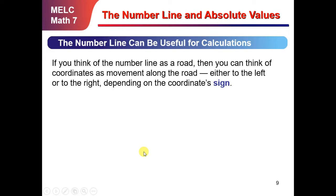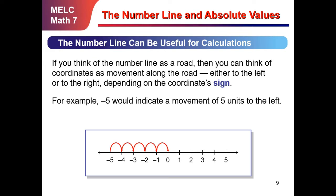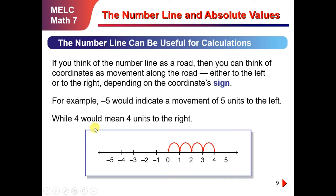The number line can be useful for calculations. If you think of a number line as a road, you can think of coordinates as movement along the road, either to the left or to the right, depending on the coordinate sign. For example, negative 5 would indicate a movement 5 units to the left. Considering that 0 is the starting point, in order to go to negative 5, we just need to move 5 places to the left. While 4 would mean 4 units to the right — from 0, going to positive 4, we move 4 units to the right. Going left means negative and going right means positive.